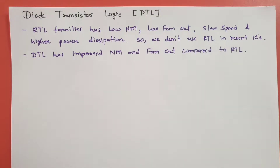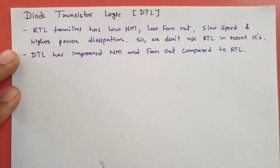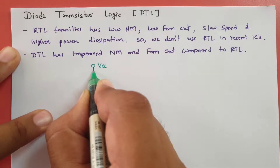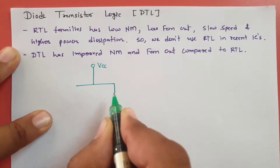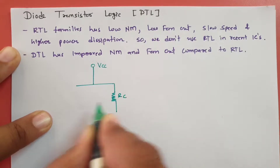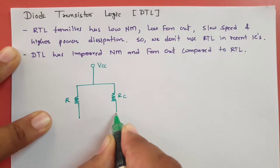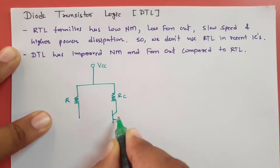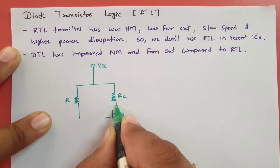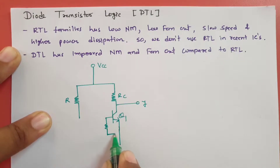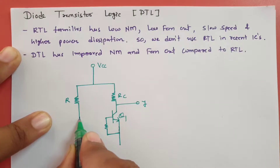To understand diode transistor logic, let us look at a DTL NAND gate and see how it works. We have a VCC power supply, a biasing resistance RC, and a biasing resistor R. Here we have transistor Q1, and the output Y is taken from its collector.